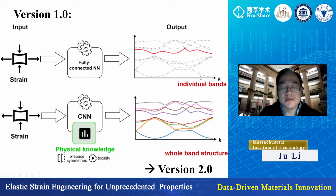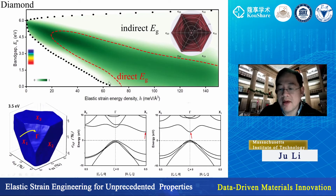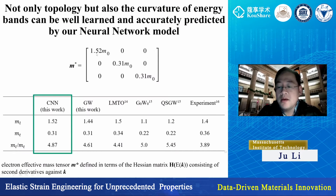We have version 2.0 of this machine learning model using a convolutional neural network. For diamond, the direct band gap island is actually much closer to the achievable strain range than in silicon, and experimentally we are already in that region. So you really can make diamond a direct band gap material, with a band gap approaching that of gallium nitride.